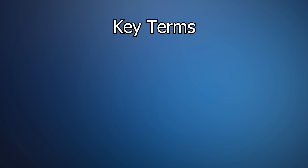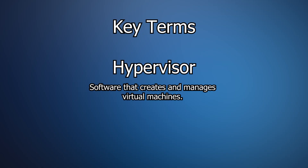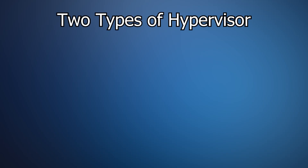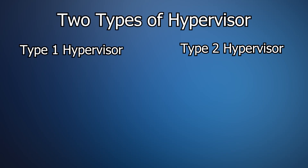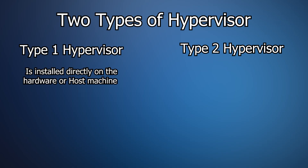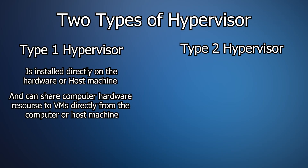Here are key terms for you to note. A hypervisor is a software that creates and manages virtual machines. There are two types of hypervisors: type 1 and type 2. A type 1 hypervisor is installed on the hardware and can share hardware resources directly to the virtual machines.